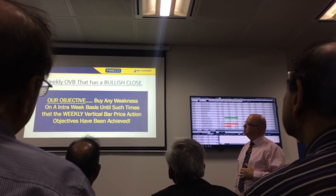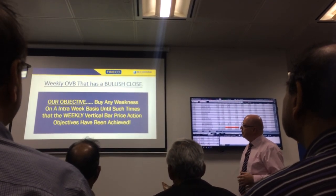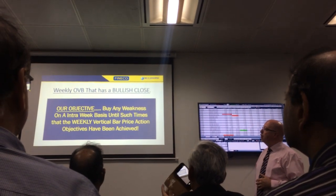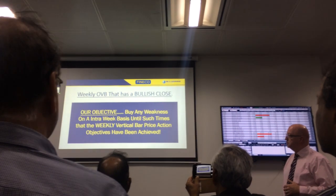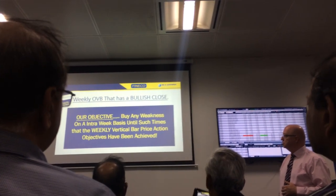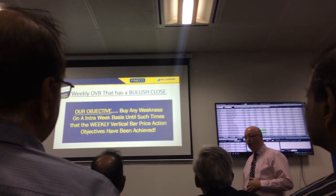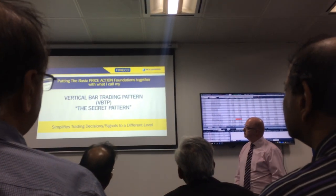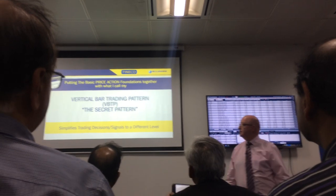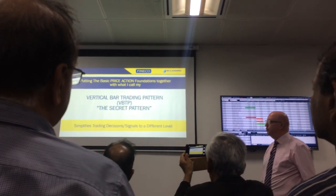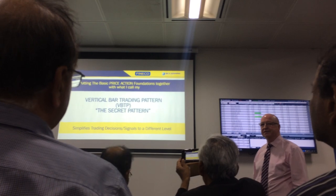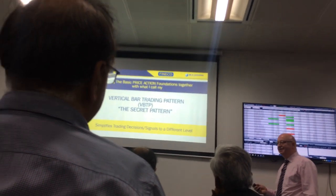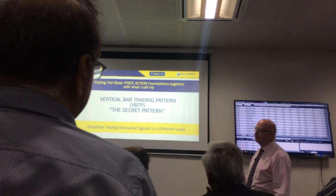As I've already discussed, the weekly outside vertical bar has a bullish close, and as I've stated, our objective is to buy any weakness until such times as our objectives have been achieved, or that particular bar breaks to the downside. Now, putting the basic price action foundations together of what I call the vertical bar trading pattern — I call it the secret pattern — simplifies trading decisions and takes our signals quite often to a different level.